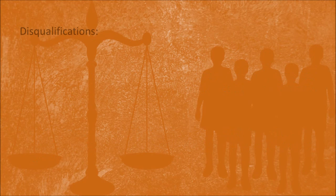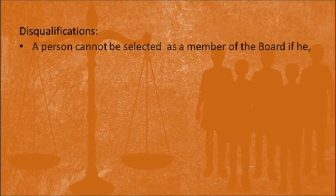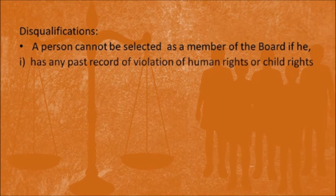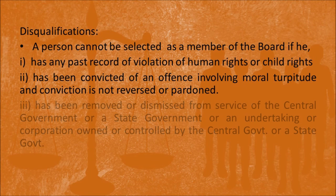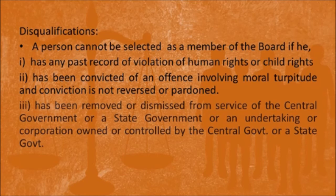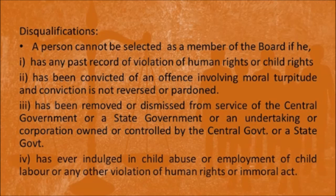Any person cannot be selected as a member of the Juvenile Justice Board if he has certain disqualifications. The act provides for four such disqualifications. Firstly, if that person has any past record of violation of human rights or child rights. Secondly, if the person has been convicted of an offence involving moral turpitude and the conviction has not been reversed or pardoned. Thirdly, if the person has been removed or dismissed from service of the central or state government or an undertaking or corporation owned or controlled by them. Fourthly, if that person has ever indulged in child abuse, employment of child labour, or any other violation of human rights or immoral act.